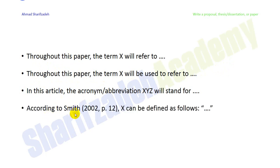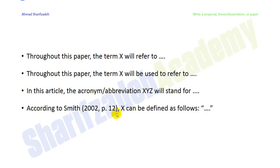You can also cite a definition from another source: 'According to Smith, X can be defined as follows.' This might be a general definition. If you stick to this definition in your research, you can specify the minimum and maximum features — you have to delimit: which features are included and which are not.